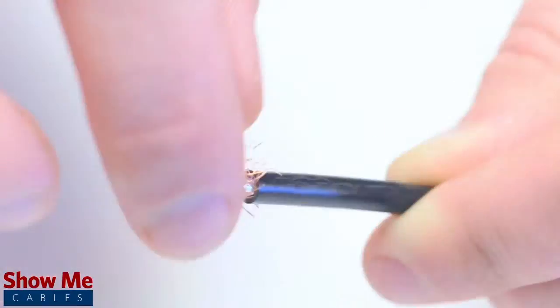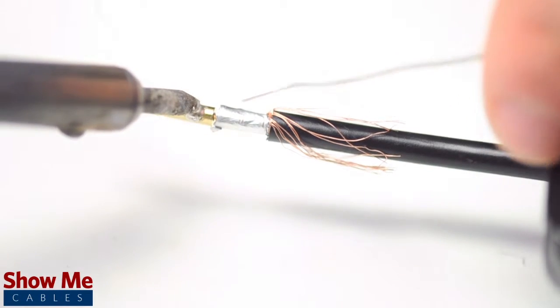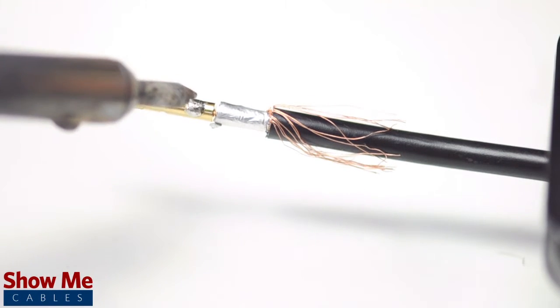Pull back the braided shield and insert the pin onto the center conductor. Solder the pin onto the center conductor and insert the connector housing over the cable.